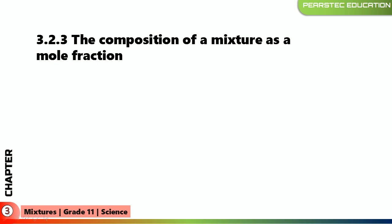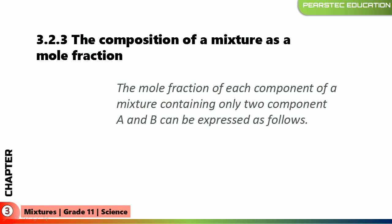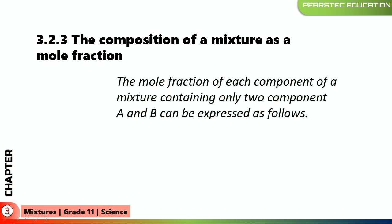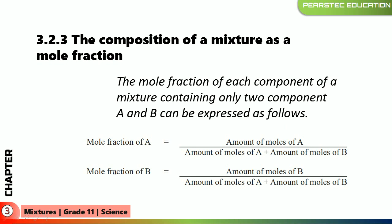The composition of a mixture has a mole fraction, so here the mole is coming into action. The mole fraction of each component of a mixture containing only two components A and B can be expressed as follows. If you have two components in a mixture, the mole fraction of A is always moles of A over moles of A plus moles of B. The mole fraction of B uses moles of B over the total moles of A and B.